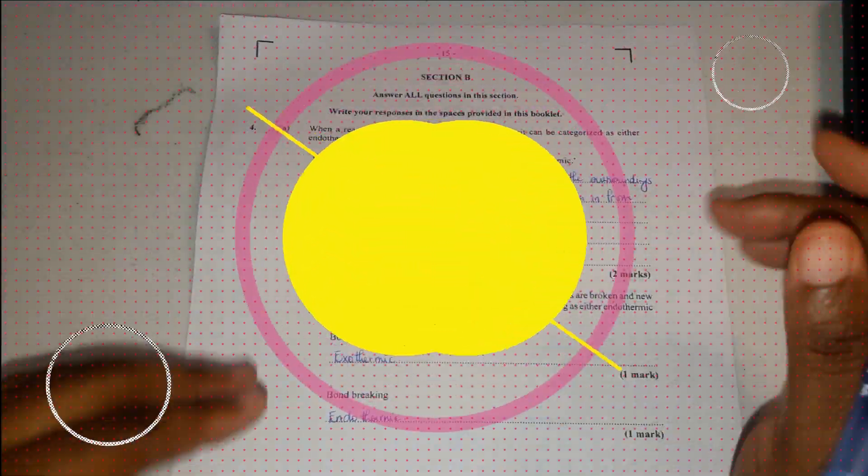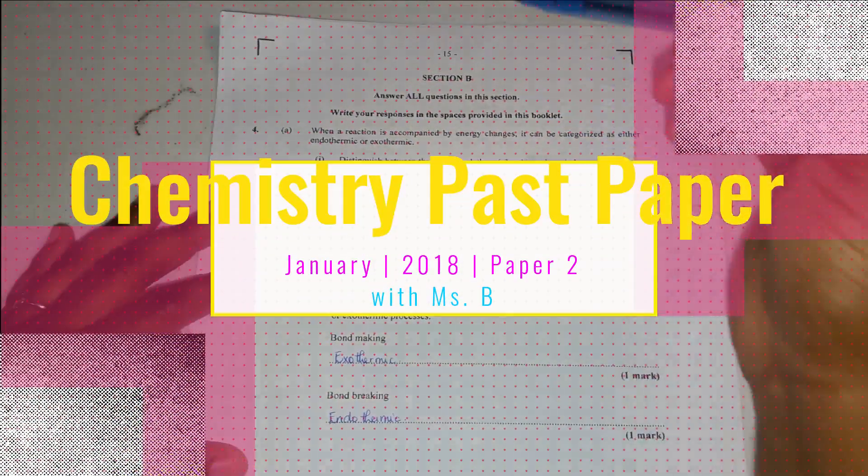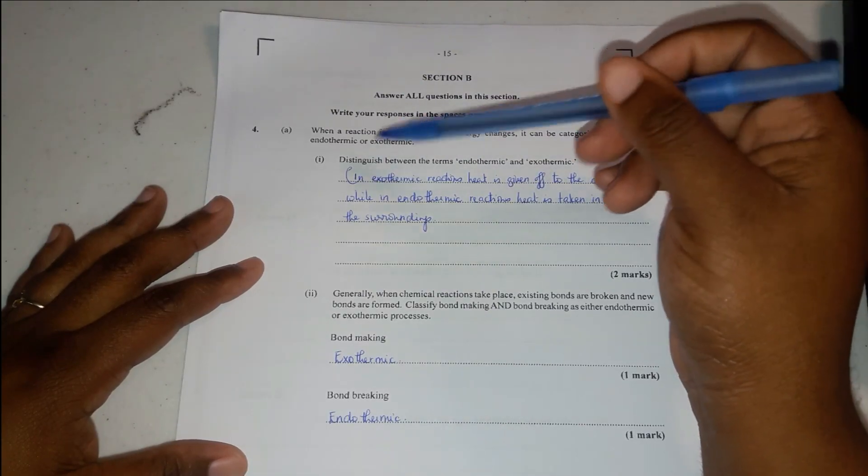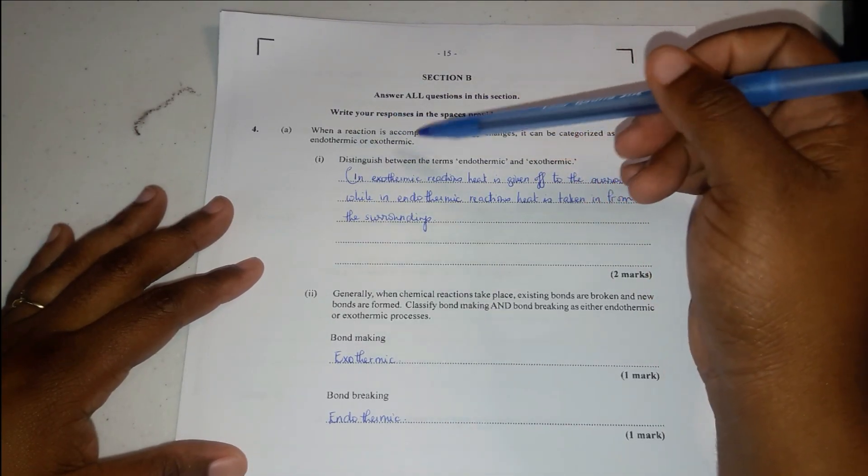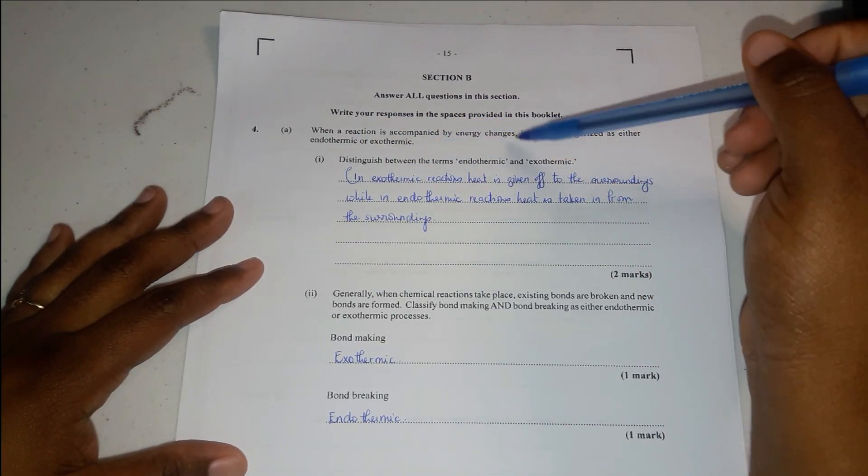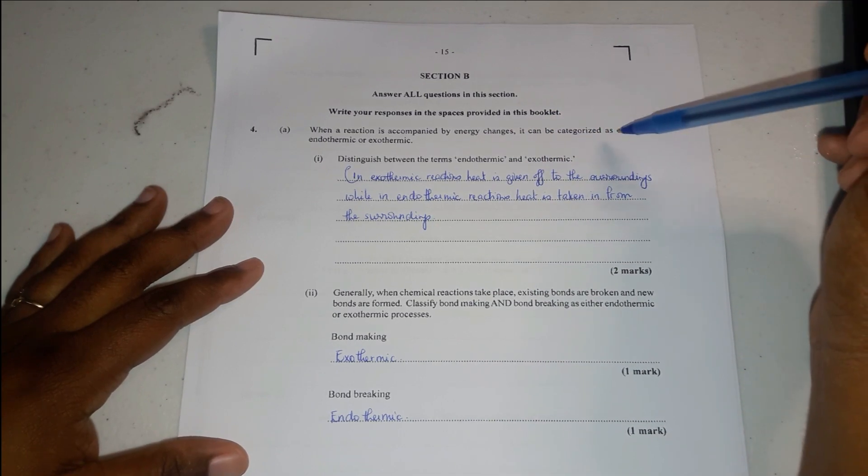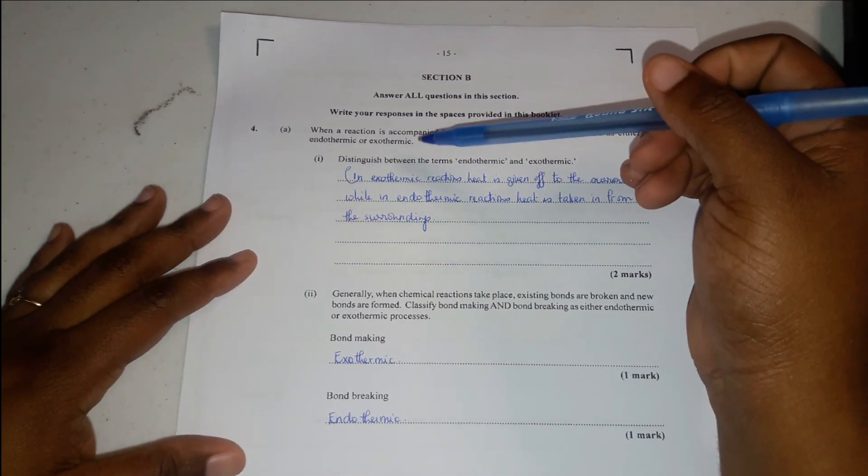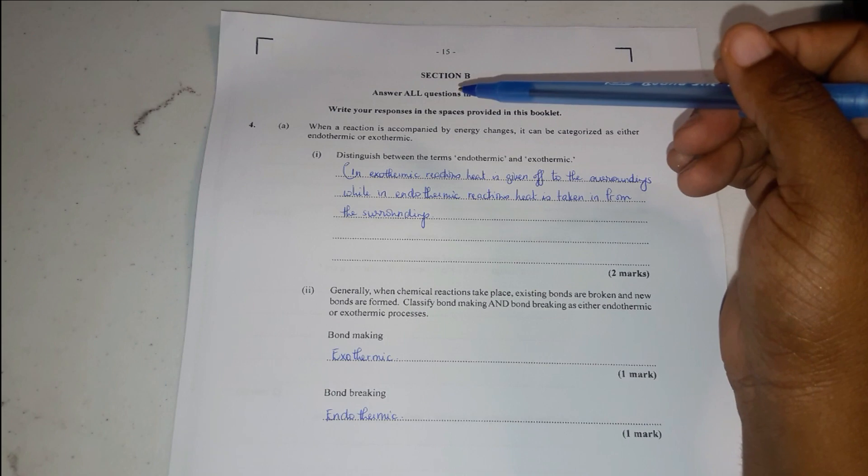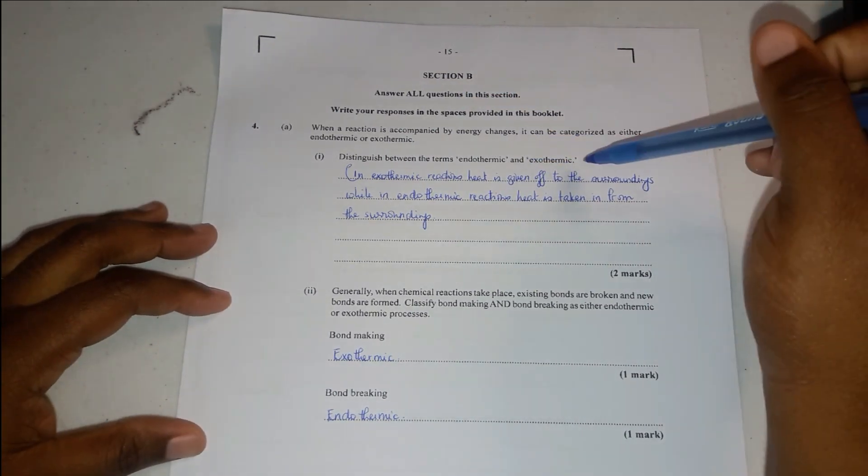Okay, so now we are on question 4, section B. When a reaction is accompanied by energy changes, it can be categorized as either endo or exothermic. Distinguish between the terms endo and exothermic.